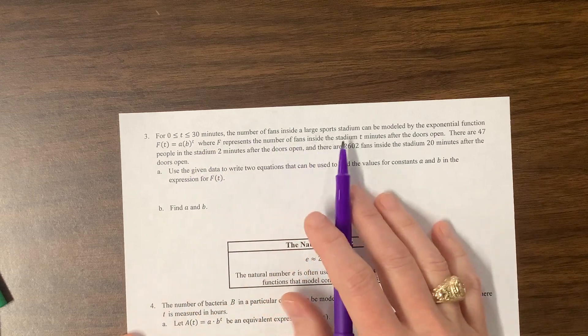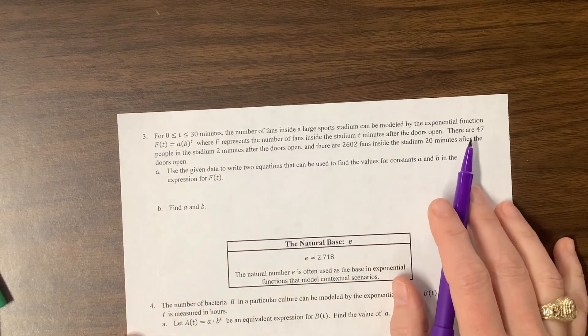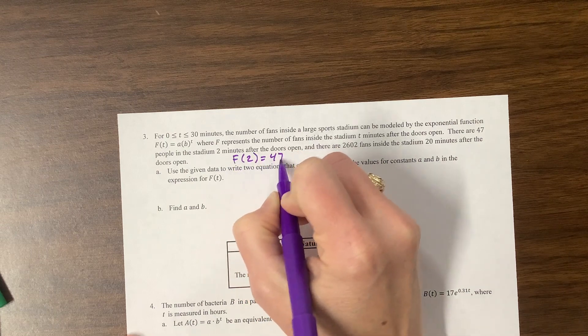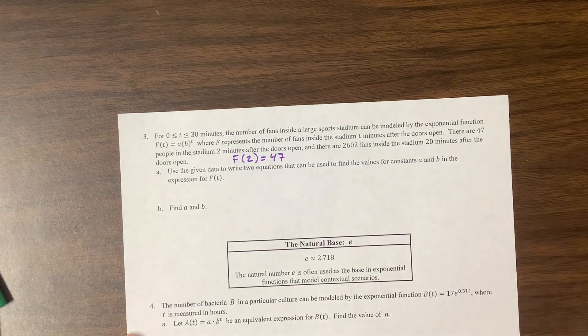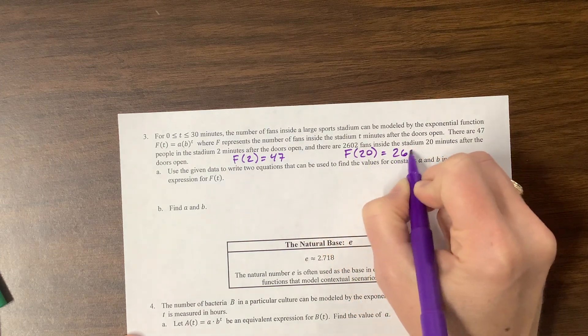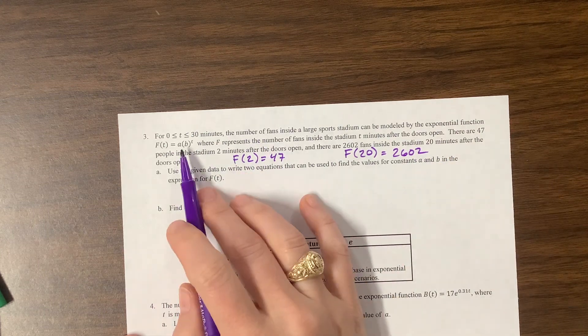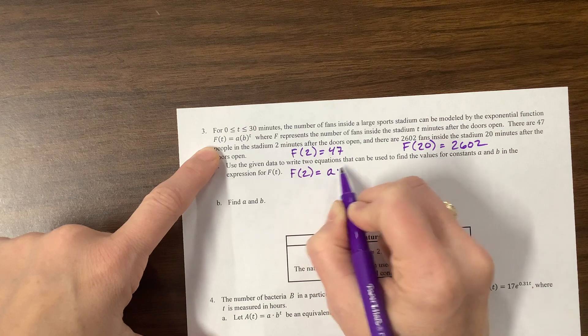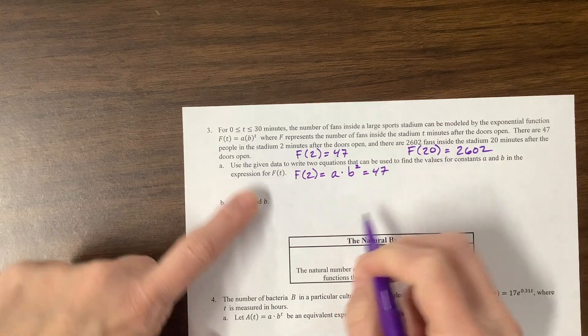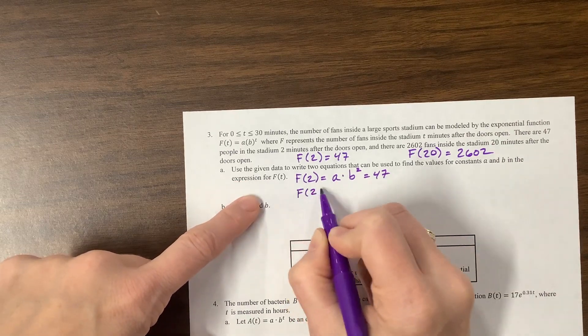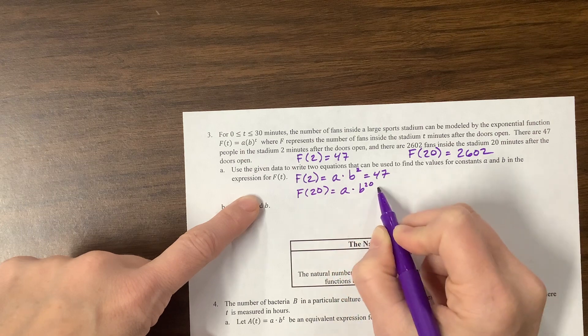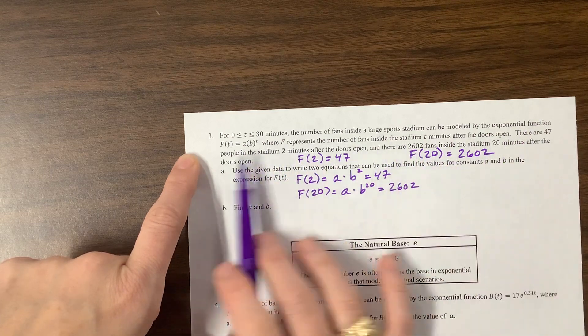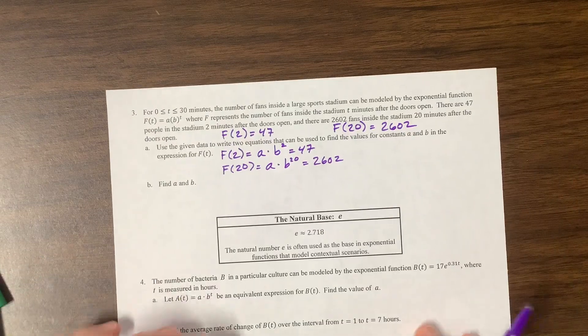Okay. So it tells us that the number of fans in a large sports stadium can be modeled by an exponential function here. And now they're telling us that there's 47 people in the stadium two minutes after the door opens. So basically we have F of two is equal to 47. And there are 2,602 fans, 20 minutes after it opens. F of 20 is equal to 2602. And so they want us to write two equations. Well, they told us the format of the equation. So we can come up here and say, well, F of two would be equal to A times B to the two, which is equal to 47. And then the other one is that F of 20 is equal to A times B to the 20th. Which is 2602. Is all this in minutes? Minutes, two minutes. Yep. There are 47, two minutes, 20 minutes. Okay. All of our units seem to be just fine.